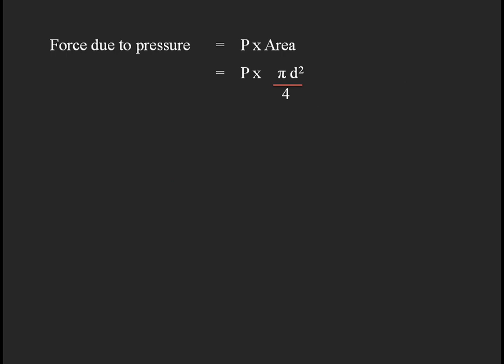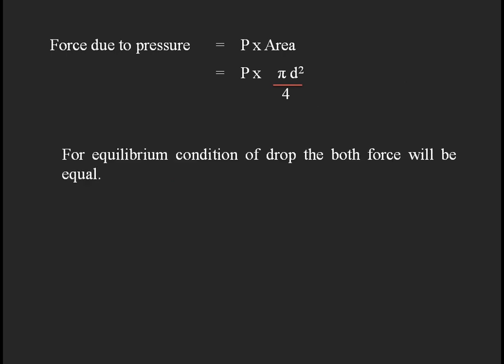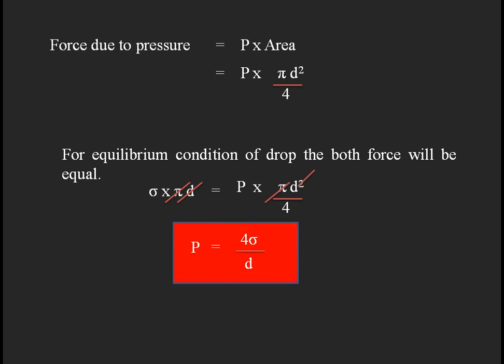For the equilibrium condition, we make the two forces equal: σ × πd = p × πd²/4. Cancelling the common terms from both sides, we get the equation p = 4σ/d, which is the equation for the pressure acting inside a liquid droplet.